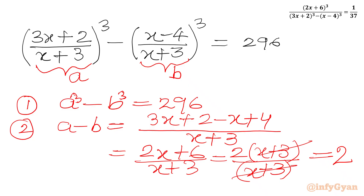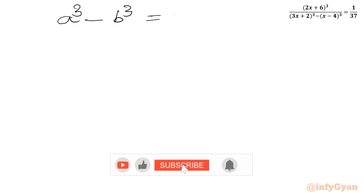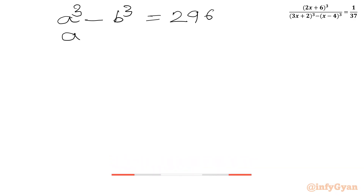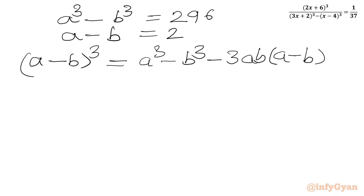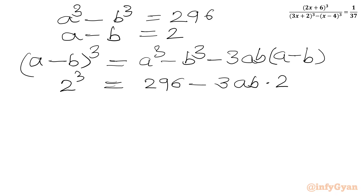We now have two equations: a³ - b³ = 296 and a - b = 2. I will apply the algebraic identity (a-b)³ = a³ - b³ - 3ab(a-b). Substituting: 2³ = 296 - 3ab × 2, so 8 = 296 - 6ab.